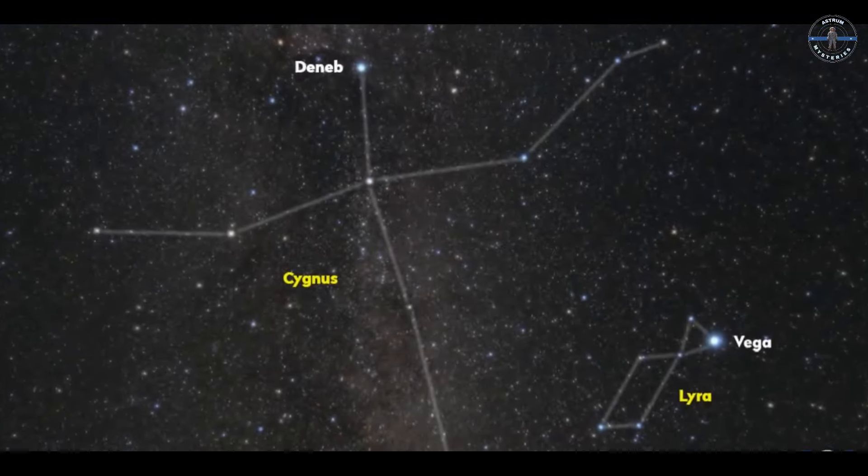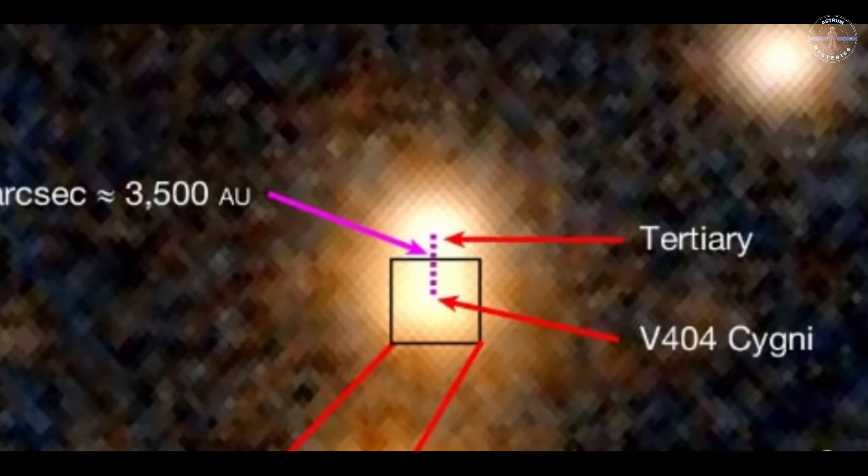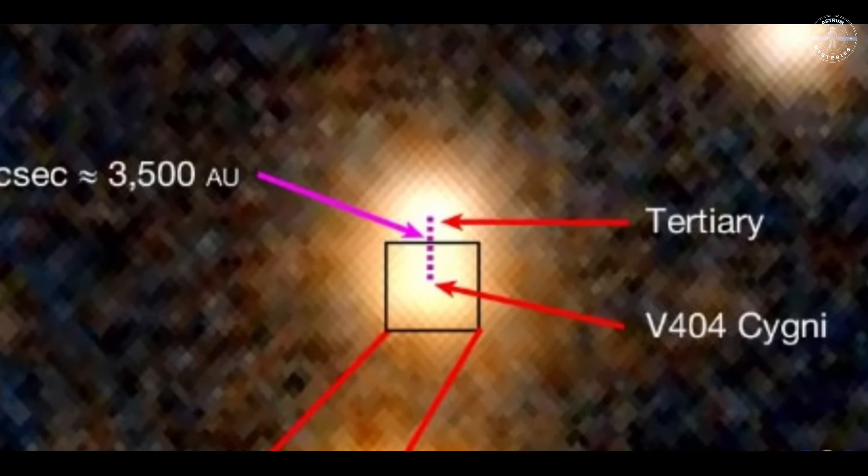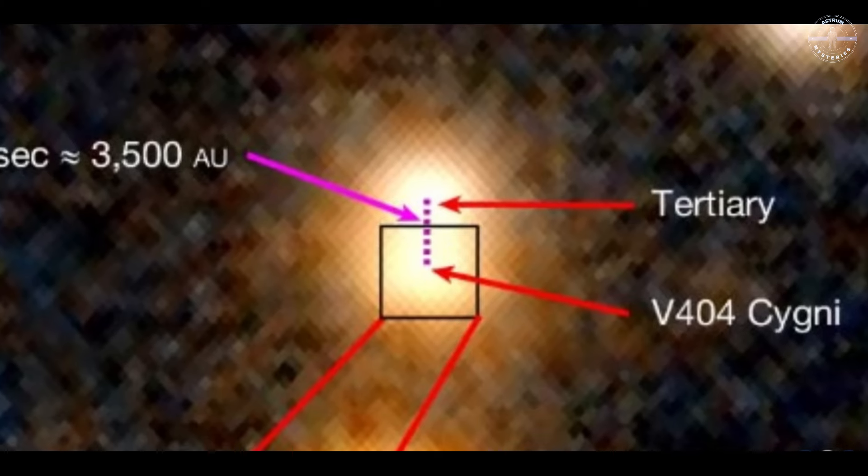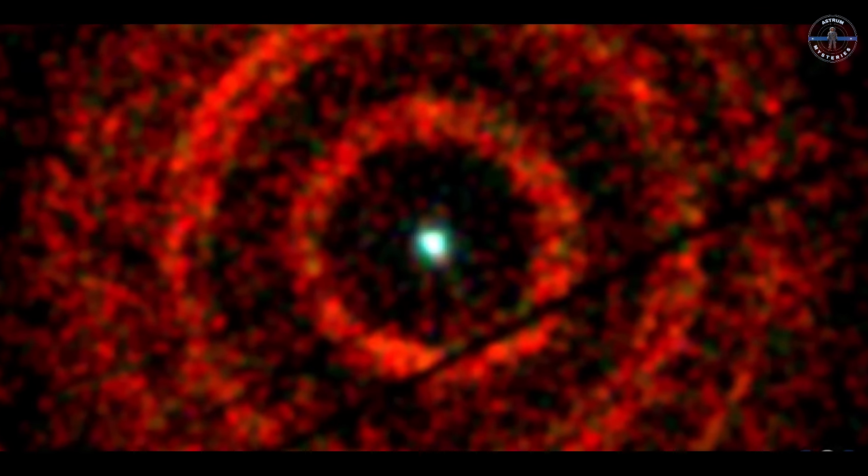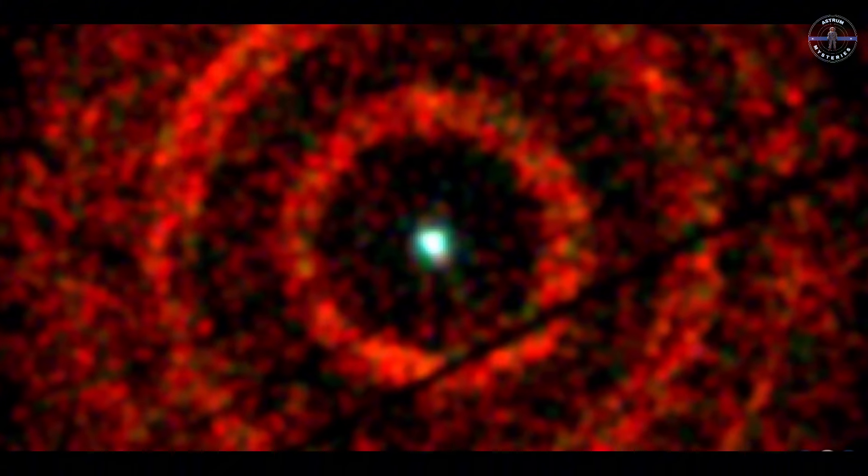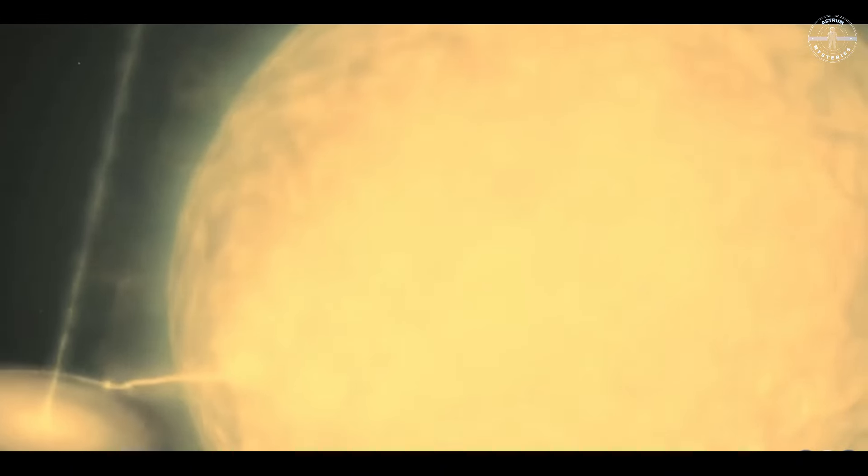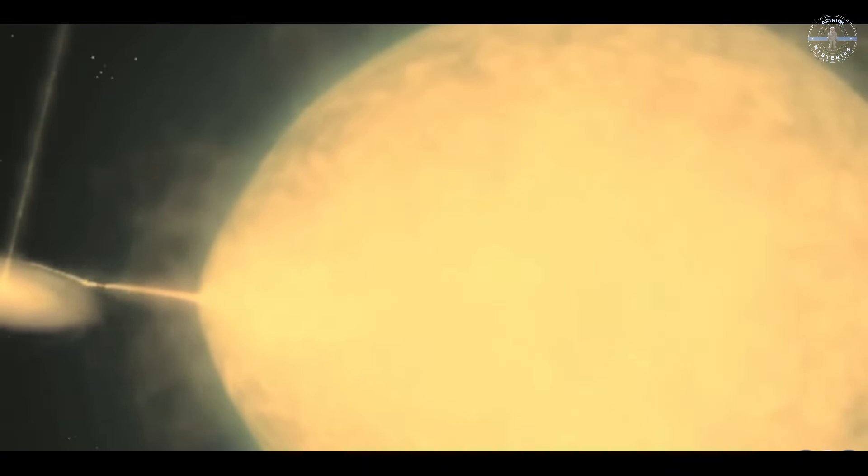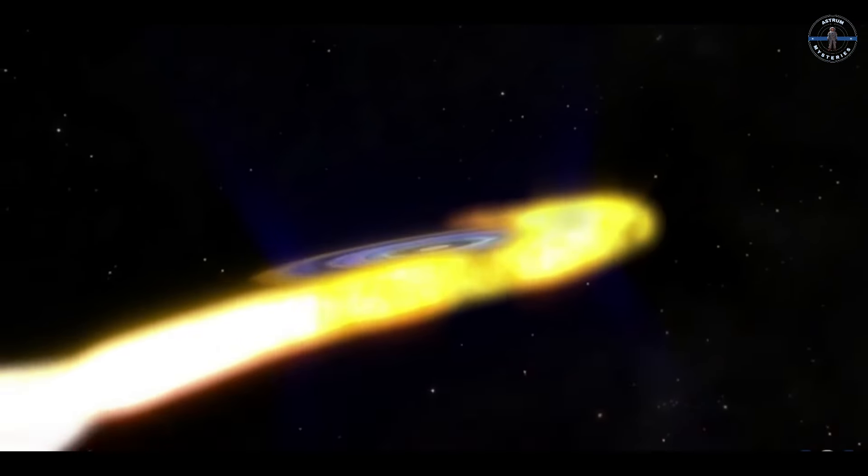Meet V-404 Cygni, a galaxy 8,000 light-years from Earth, where a triple black hole system was recently discovered by astronomers. Here, a star so close to its black hole companion that it's constantly losing its outer layers, feeding the cosmic beast. This feeding dance releases a strange glow detectable from Earth, illuminating the cosmic neighborhood.